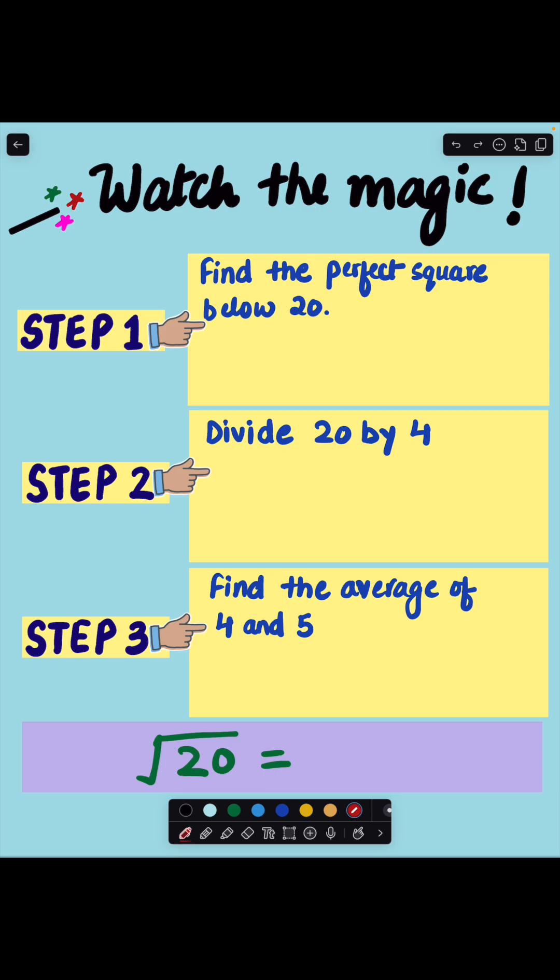First example, let's find the square root of 20. To find the square root of 20, step 1 is find the perfect square below 20, which is 16, and now we're going to get the square root of 16, which is 4.